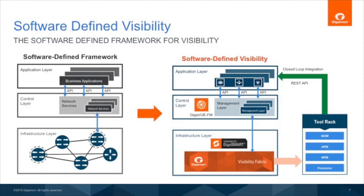We took the same construct and applied it to the visibility fabric. We have a suite of products at the visibility fabric layer powered by our intelligent GigaSmart, a set of widgets and a control layer — the GigaVUE FM — that controls the visibility fabric with a rich UI. Now with a new set of published APIs, you can write applications on top using those APIs as well.